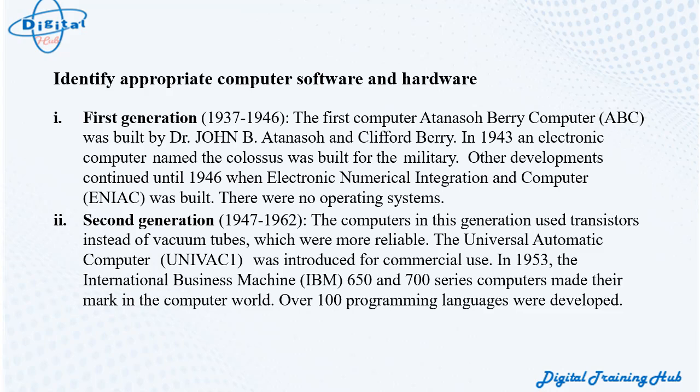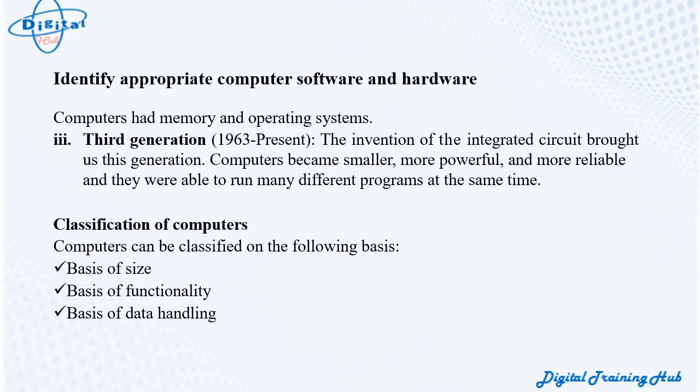Second generation (1947–1962): Computers used transistors instead of vacuum tubes, which were more reliable. The Universal Automatic Computer (UNIVAC-1) was introduced for commercial use. In 1953, the International Business Machine (IBM) 650 and 700 series computers made their mark. Over 100 programming languages were developed, and computers had memory and operating systems.